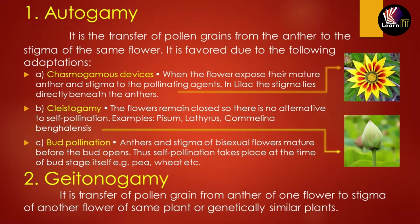The second adaptation is cleistogamy, where the flower remains closed, so it can only self-pollinate. The third is bud pollination, where the anther and stigma mature before the bud opens, so self-pollination takes place before the flower opens. These are especially seen in pea and wheat plants.